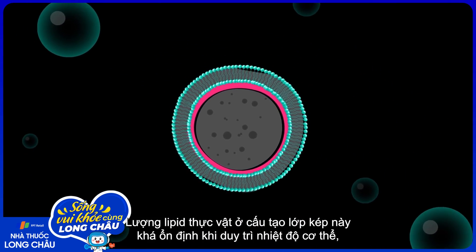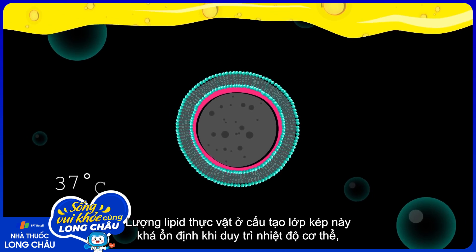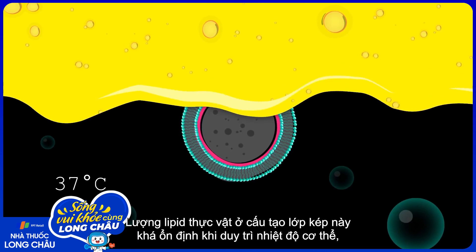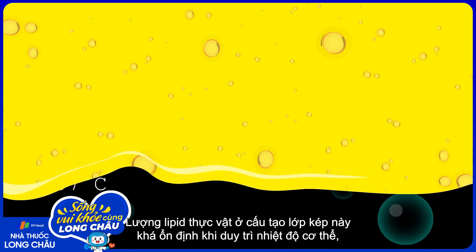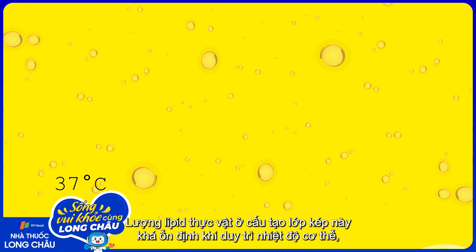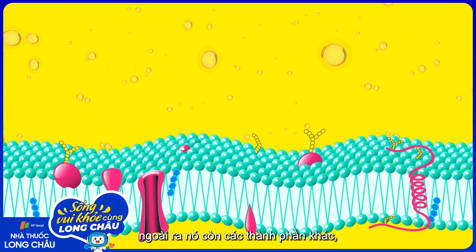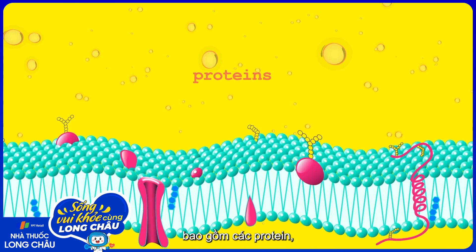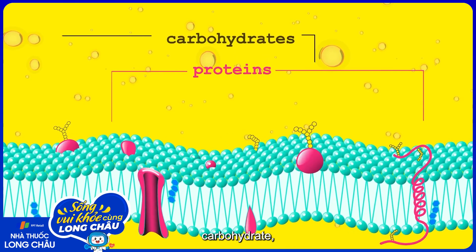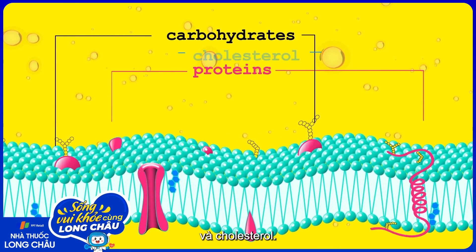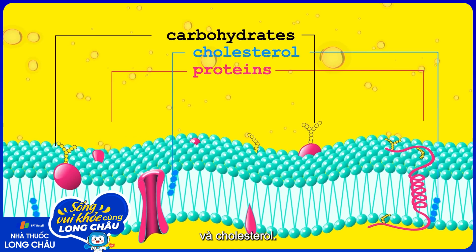This bilayer, which at body temperature has the consistency of vegetable oil, is studded with other types of molecules, including proteins, carbohydrates, and cholesterol.